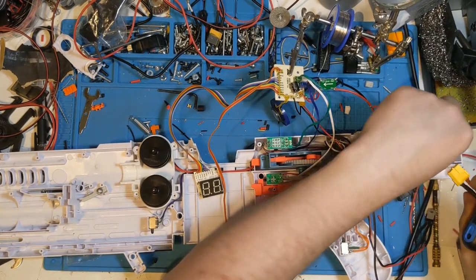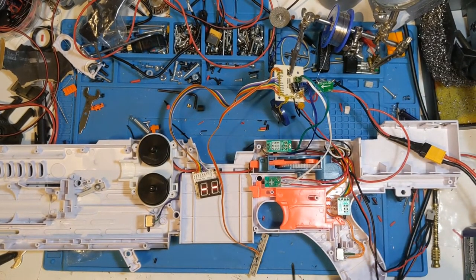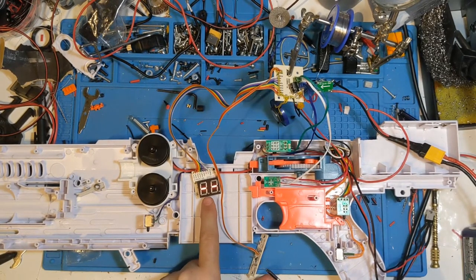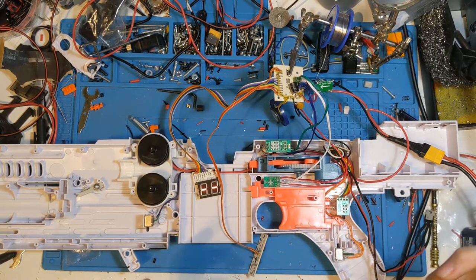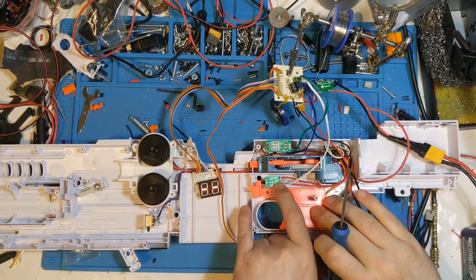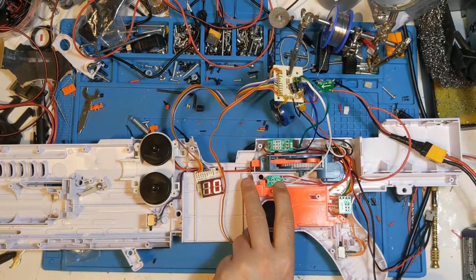So when I plug in this LiPo, everything powers up. Currently, the ammo counter is showing two dashes because, as far as the blaster is concerned, there's no magazine in it. But if I push down this little switch as if there was a magazine present, it will now start to count.